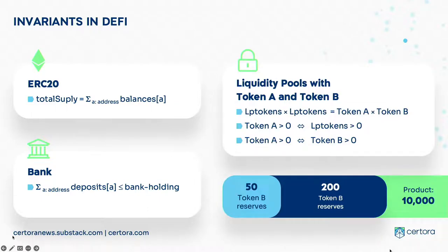Another type of invariant is the liquidity invariant. You have several tokens, say two tokens, and their product is constant. You can execute operations like deposit and withdraw, but you maintain the fact that the product is constant. Another property: if token A is zero, then token B is also zero. These are invariants you can write in our tool, and the tool either gives you a proof or finds a rare behavior that violates them.